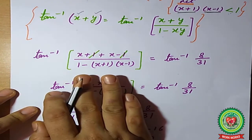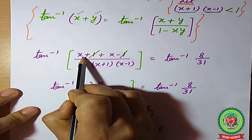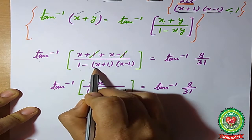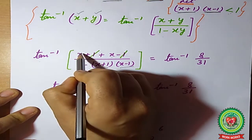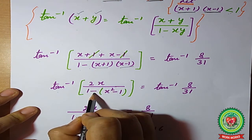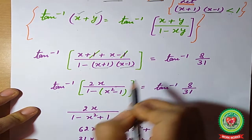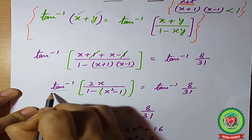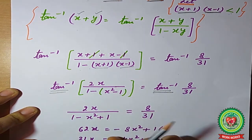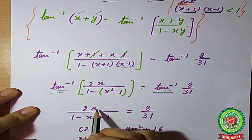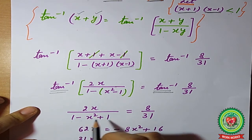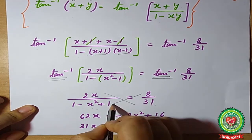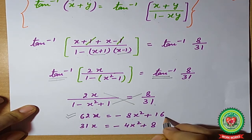Applying the formula with x = (x+1) and y = (x−1): the numerator is (x+1)+(x−1) = 2x, and the denominator is 1 − (x+1)(x−1) = 1 − (x²−1). This simplifies to tan⁻¹(2x/(2−x²)) = tan⁻¹(8/31). Dropping the tan⁻¹ on both sides gives 2x/(2−x²) = 8/31. Cross-multiplying: 62x = 8x² − 8 + 16, simplifying to 62x = 8x² + 8, or dividing by 2: 31x = 4x² + 4.